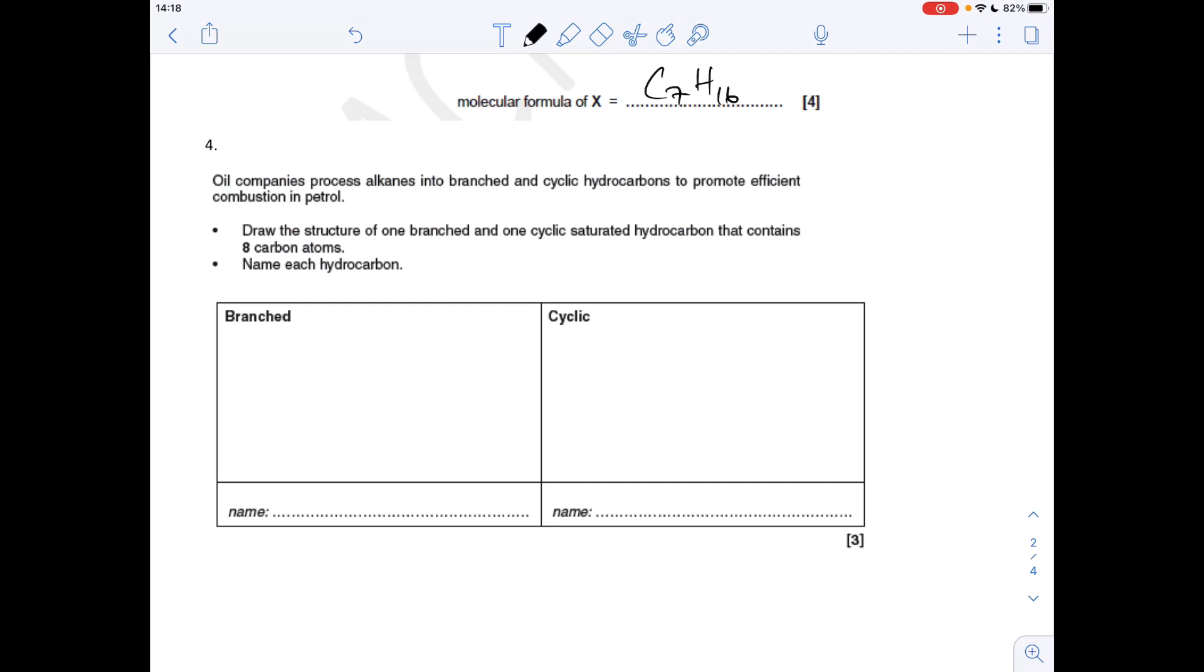Question four now. We've got to draw the structure of a branched and a cyclic saturated hydrocarbon. Saturated just means C-C single bonds that's got to have eight carbons, and we've got to name them. For the branched one, I'm going to go for seven in the main chain - one, two, three, four, five, six, seven - and I'll just put the branch on the second carbon. That will be called 2-methylheptane.